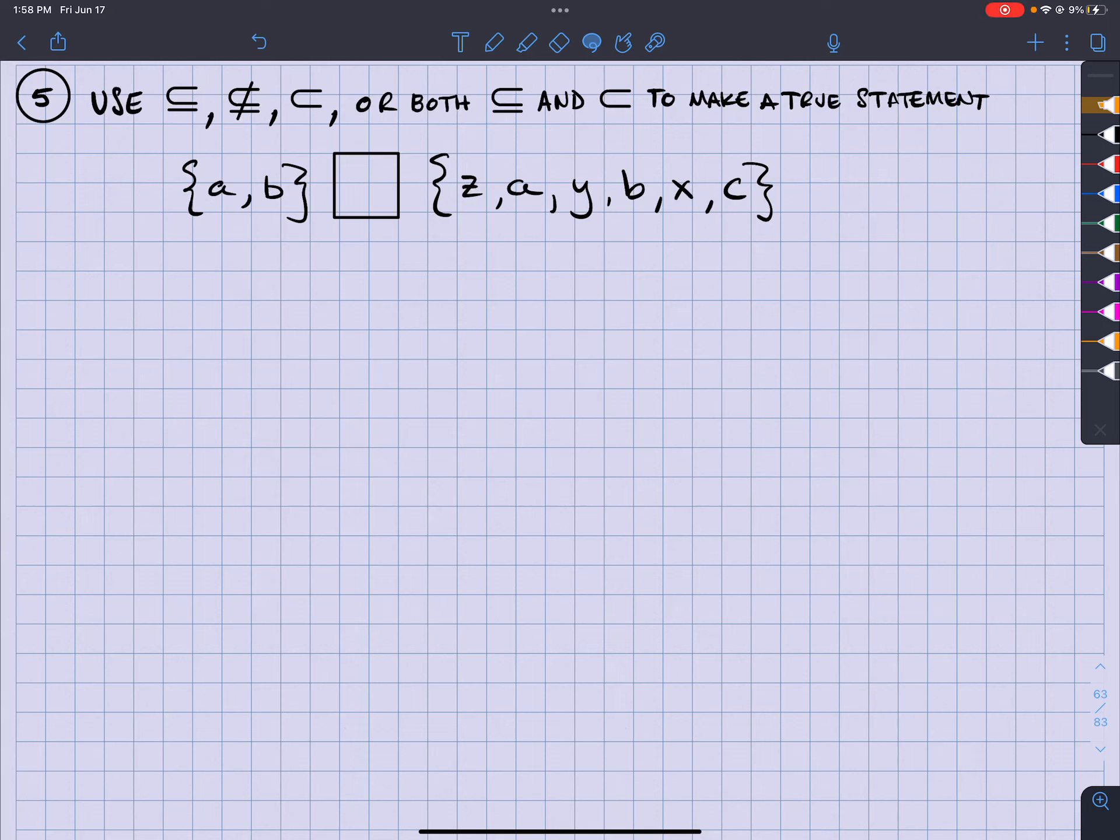What's up? It's your man, Jimmy Chan. So what we want to figure out is what symbol to put in here. The set {A, B} is what compared to {Z, A, Y, B, X, C}.